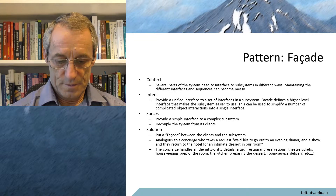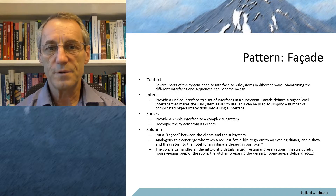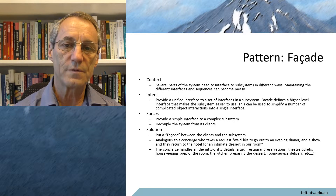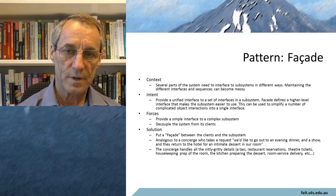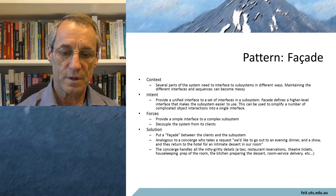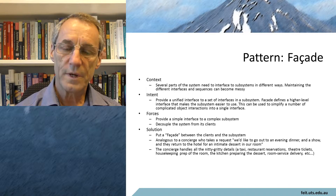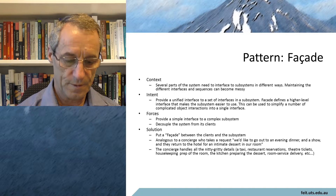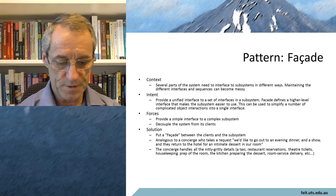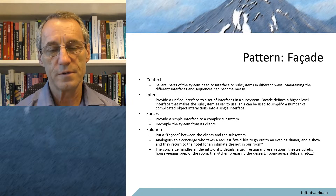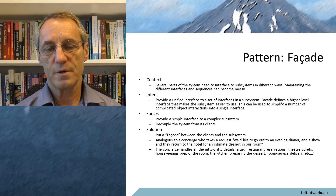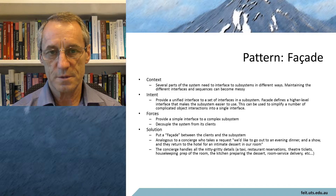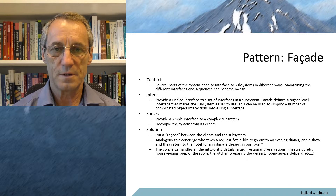Let's look at the facade pattern. The context is we have several parts of the system that need to interface to something, usually a subsystem, and they may want to interface in slightly different ways. But maintaining all the different interfaces can become problematic. So the intent is to provide a unified interface so that things either side of the interface can change independently, but the interface remains the same. This interface becomes a contract between all the parties.